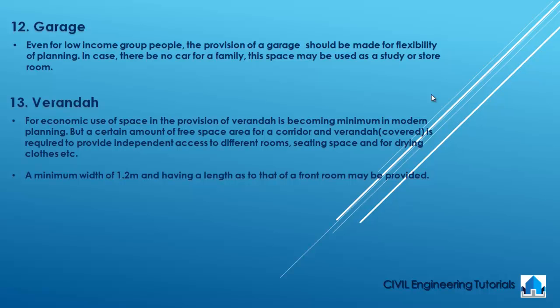For economic use of space, the provision of a veranda is becoming minimal in modern planning, but a certain amount of free space for a corridor and veranda is required to provide independent access to different rooms, sitting space, and for drying clothes. A minimum width of 1.2 meters, with a length equal to that of a front room, may be provided.